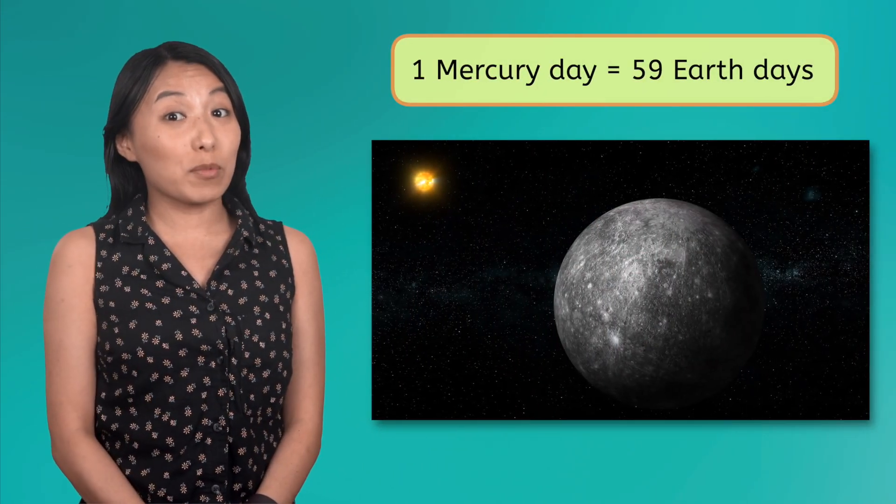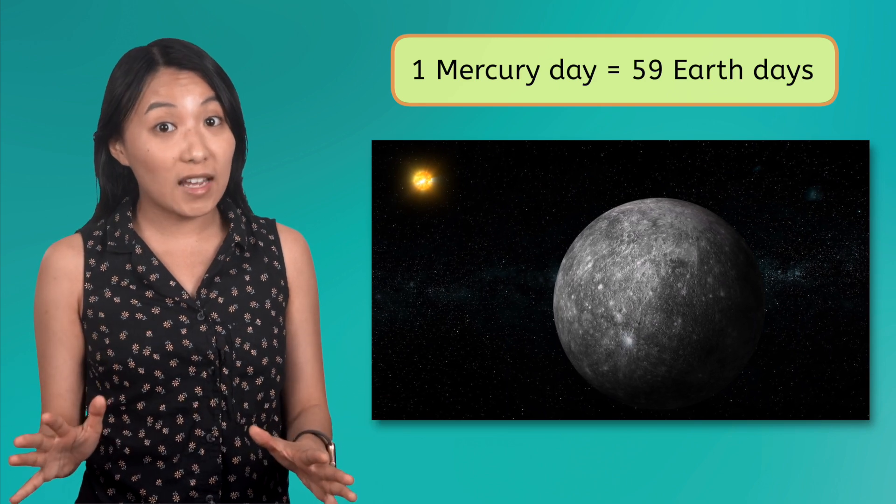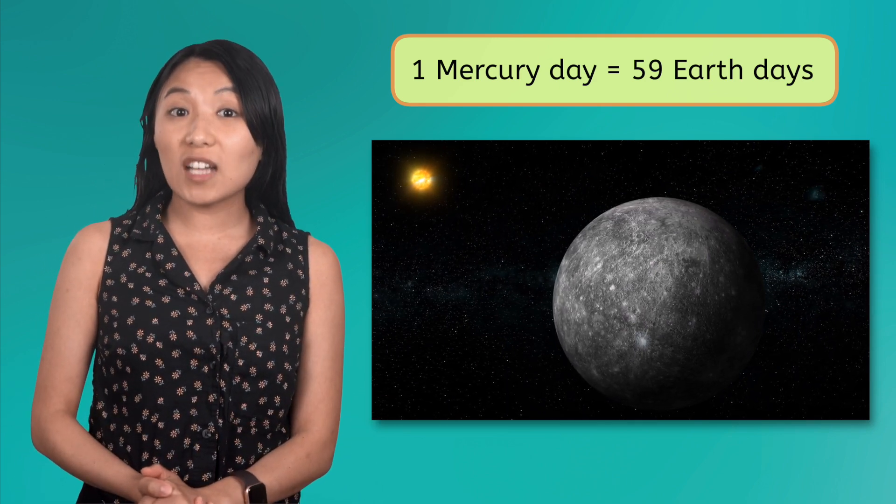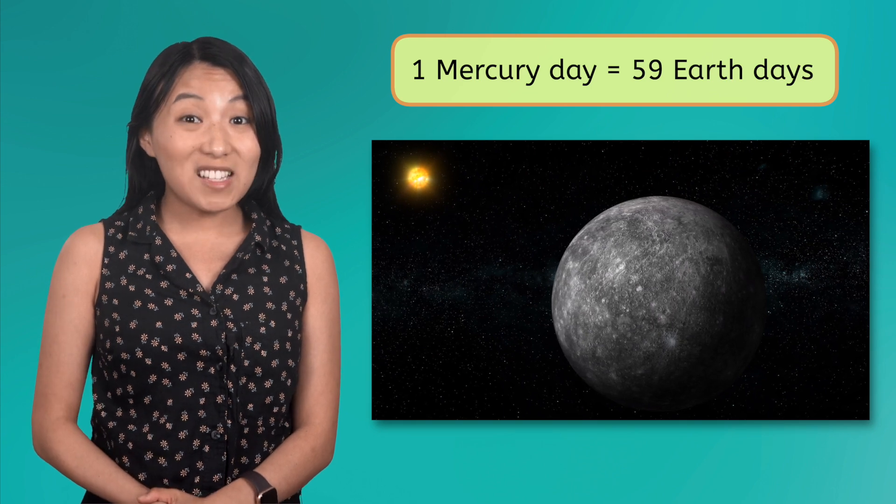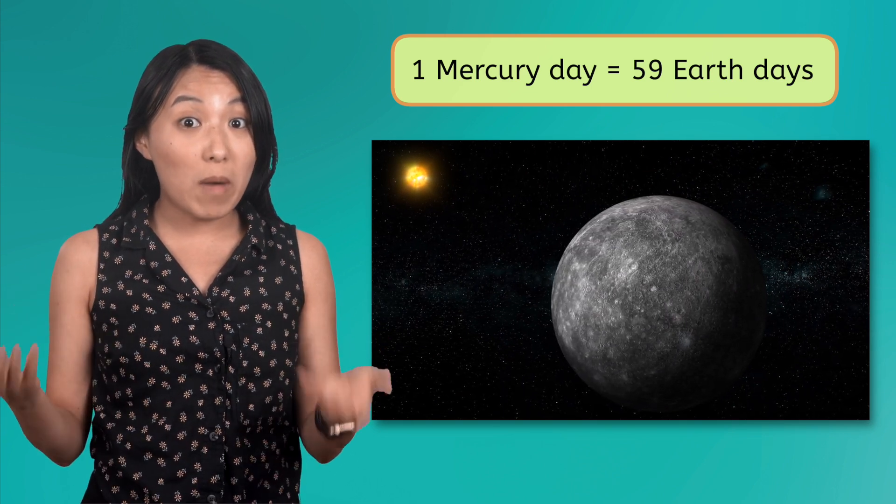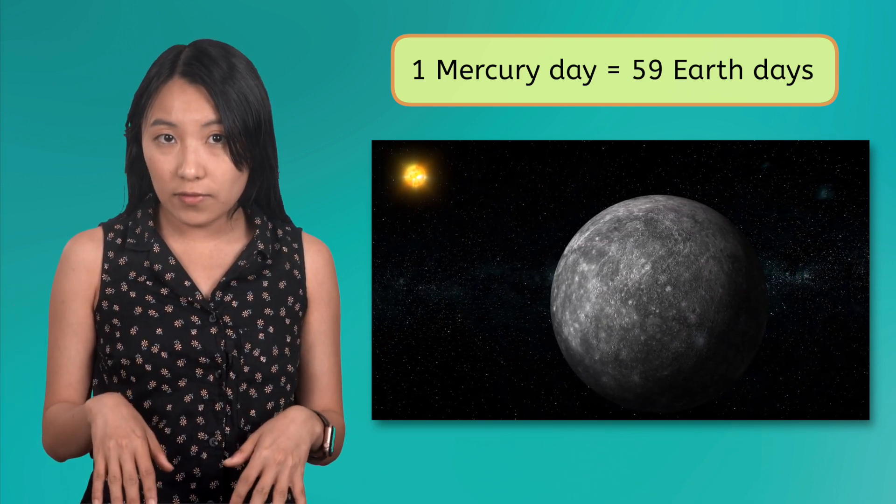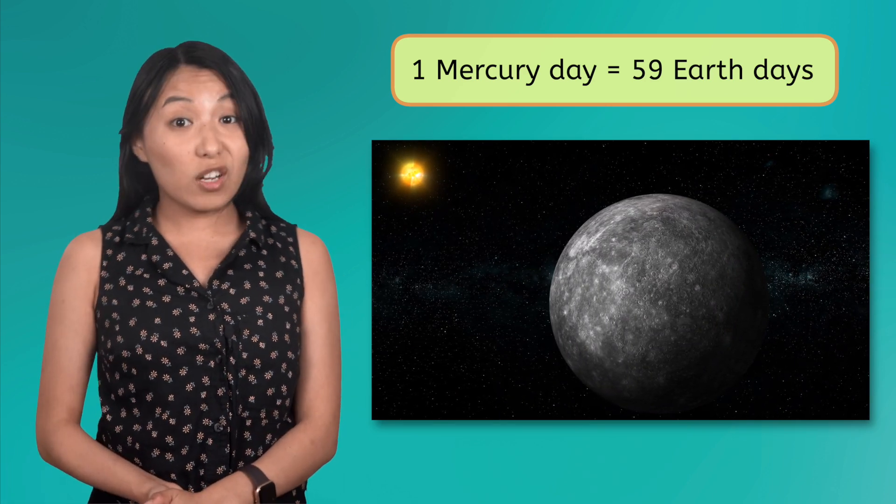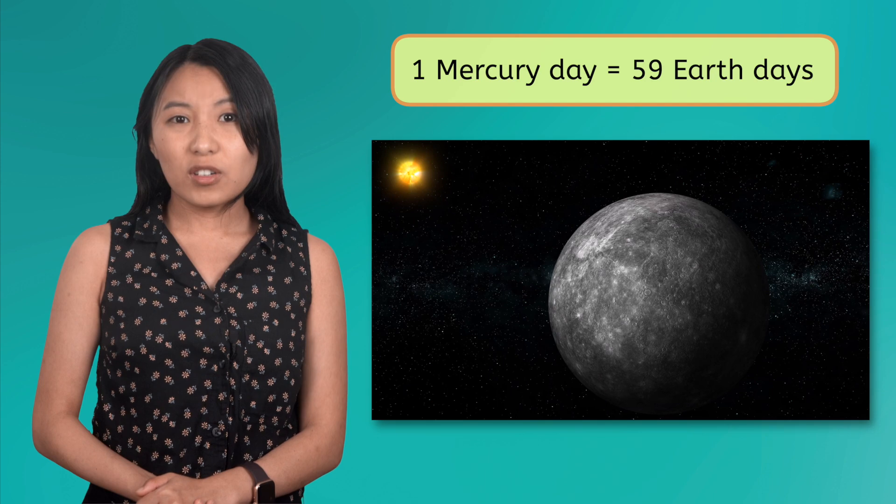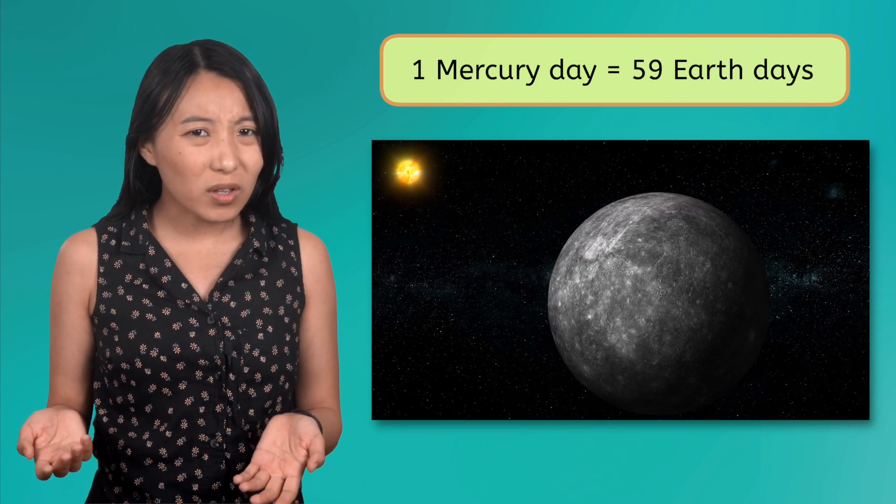Those hot days on Mercury last longer than Earth days. Mercury takes 59 Earth days to rotate once on its axis. This means it stays day for a whole month, then night for a whole month, before the Sun rises again. On the other hand, a year on Mercury is faster than on Earth. Why do you think the years are so short?